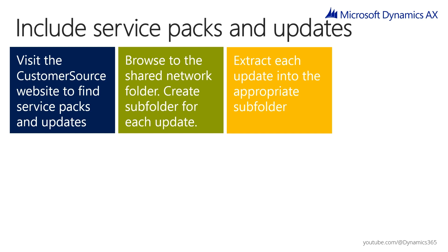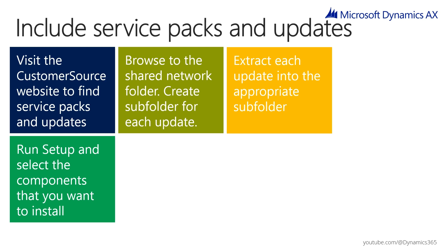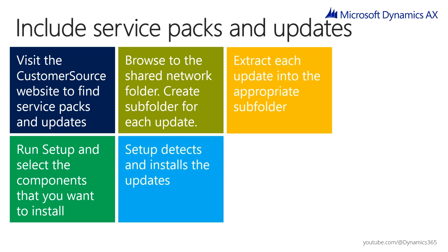If you use the update folder to deploy model files containing customizations from independent software vendors (ISVs), create a subfolder for each ISV, and within it create a subfolder named models — for example, updates/ISV name/models. Run setup and select the components to install. To install help content updates, select the help server component and the updated content set. To install additional model files, select the database component and the additional model files. Setup then detects and installs the updates.